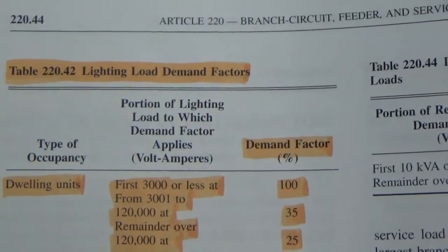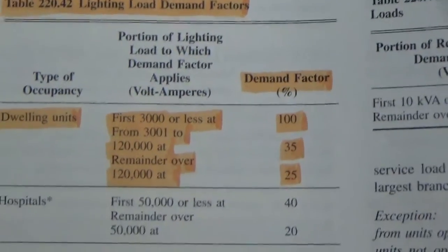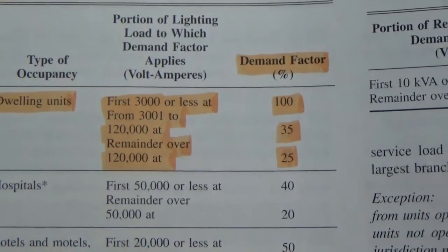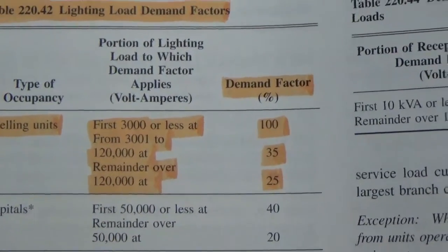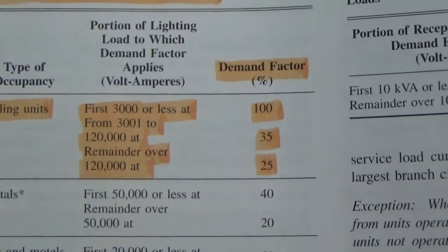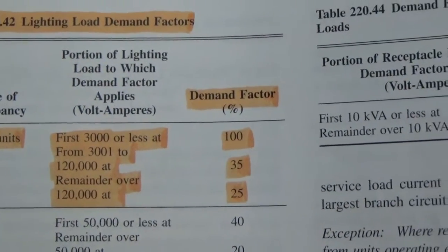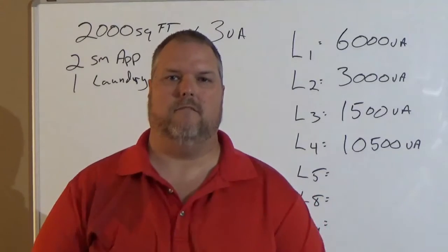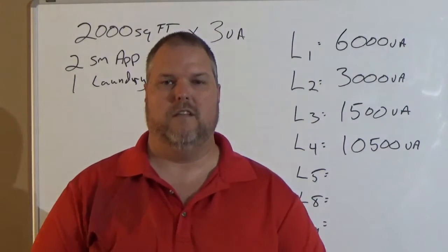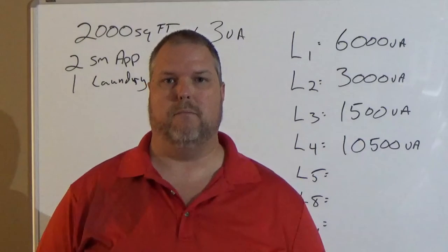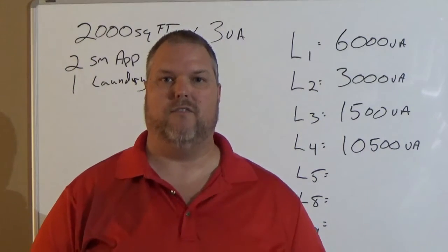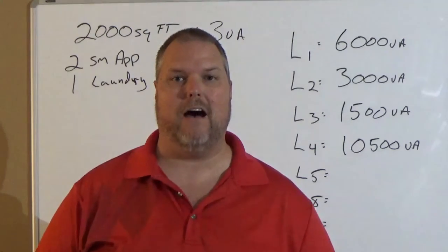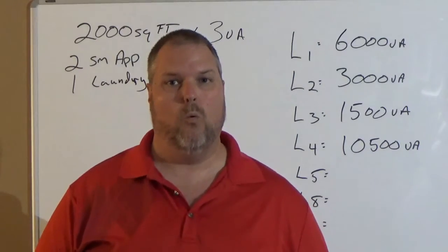We have to go back and look at the code. Table 220.42, lighting demand loads. We're looking at dwelling units. First 3,000 or less, we take it 100%. 3,001 to 120,000, we take it 35%. The remainder after the 120,000, we take it 25%. The first thing we have to do is minus 3,000 from our total number. Because, according to 220.42, we have to take the first 3,000 and take it at 100%.